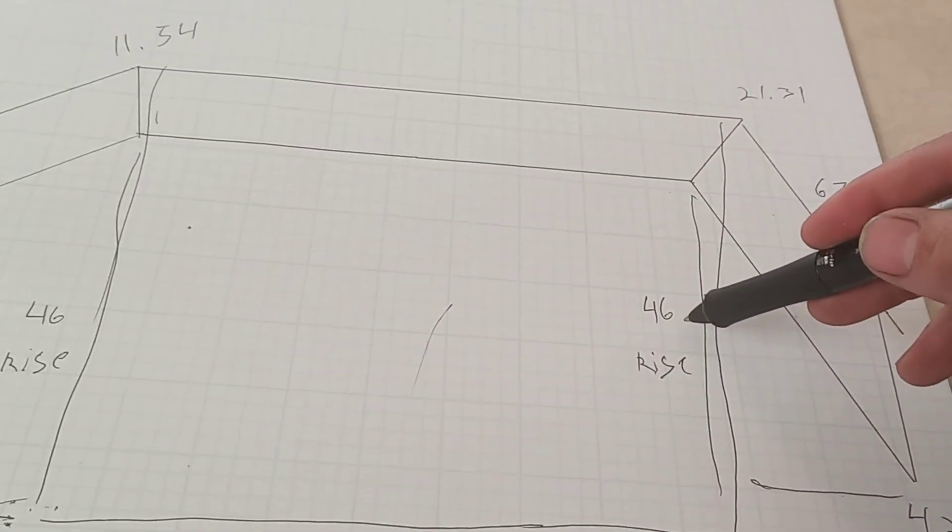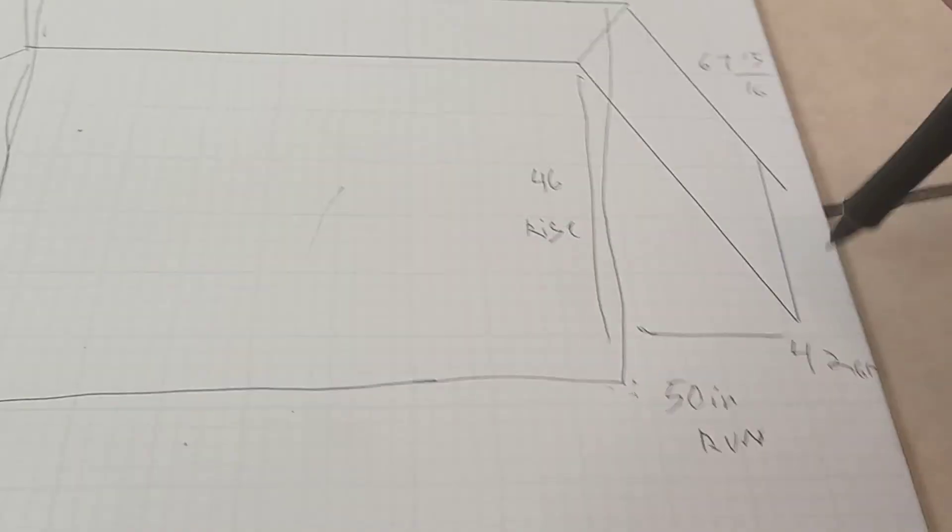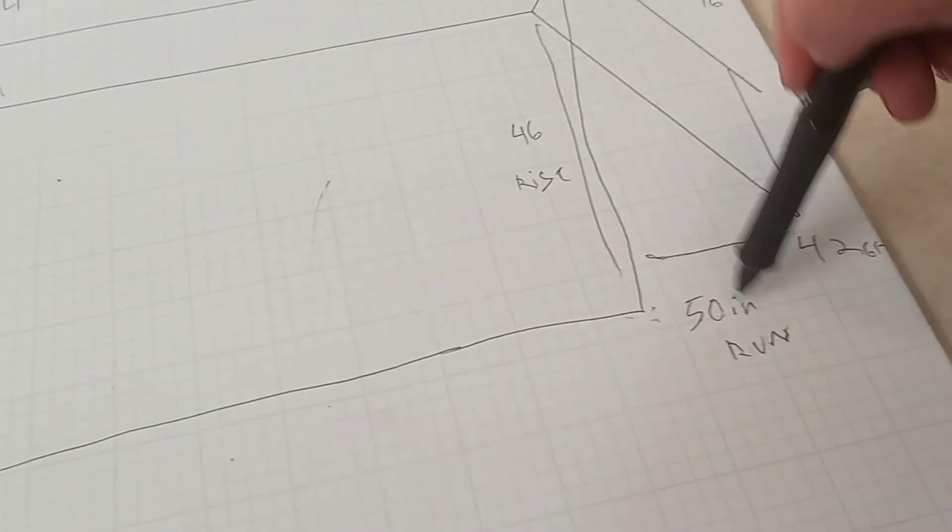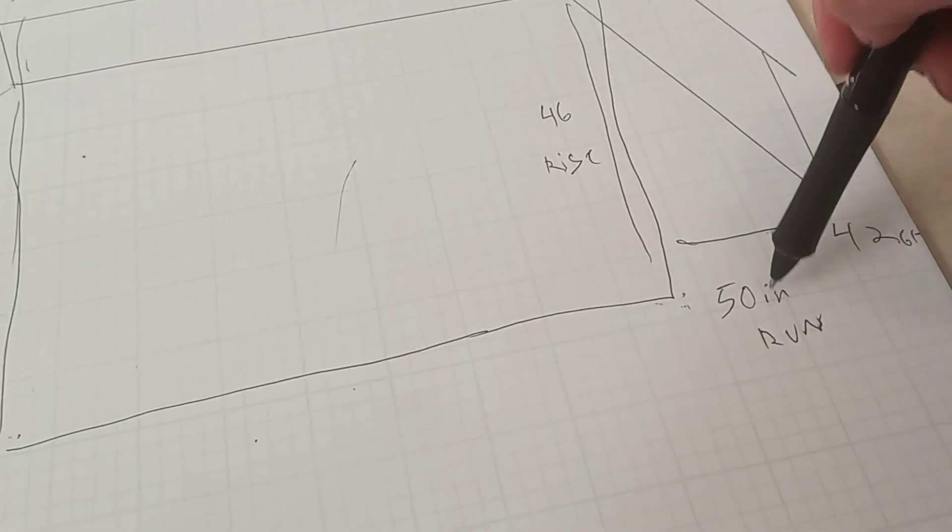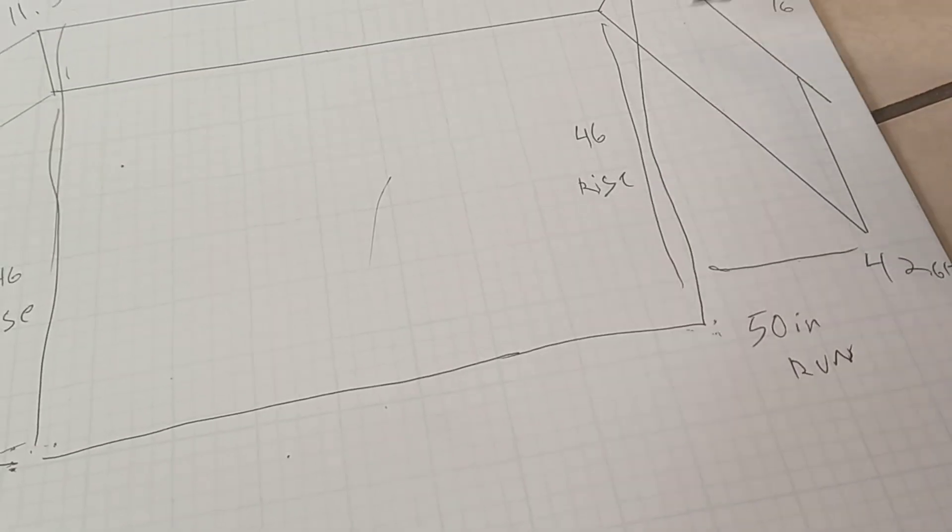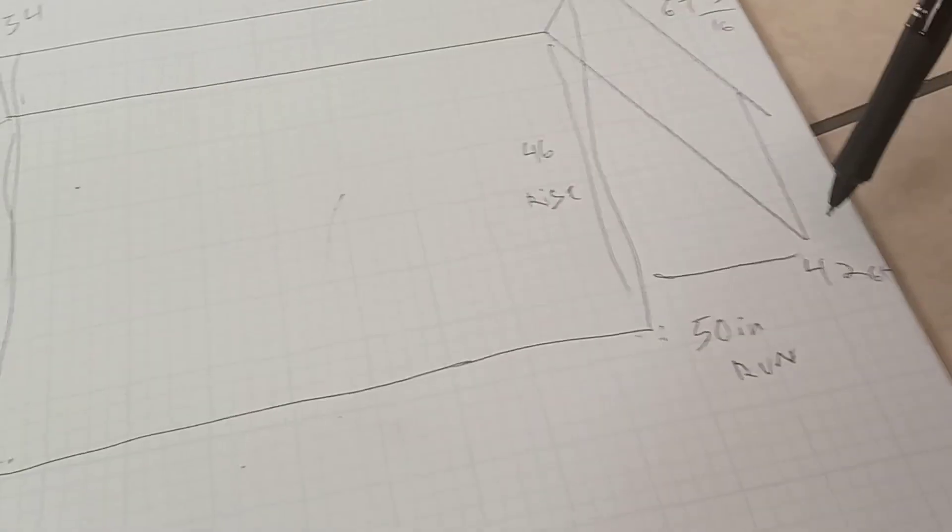We have a 42-inch run. So, a 42-inch run at the same rise, 46 degrees, will give you a different diagonal and different...I'm sorry, a 50-inch run. A 50-inch run at 46 degrees will give you a different diagonal and different degree cuts.